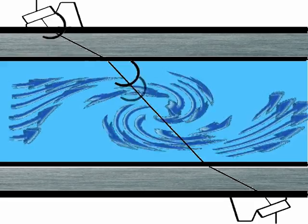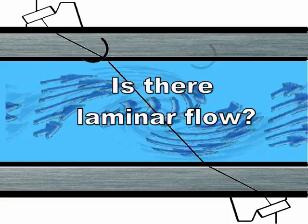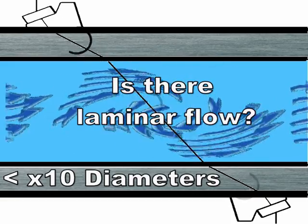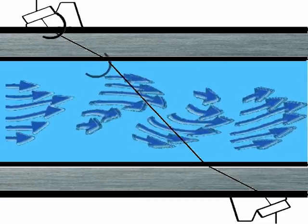Is there laminar flow? Because if it's very disturbed flow, again this will disperse the signal. Typically, you'll have laminar flow when you have 10 diameters upstream and 5 diameters downstream from the flow meter clear of any obstructions.